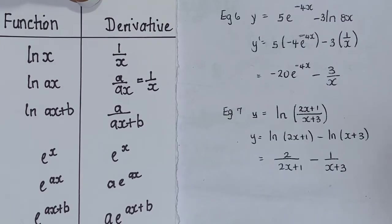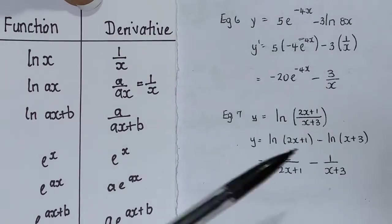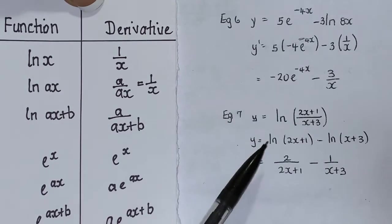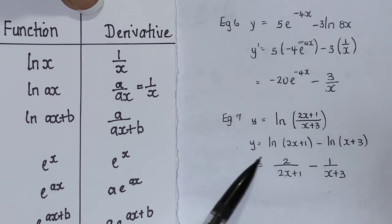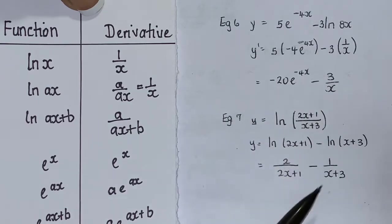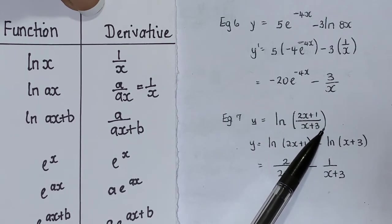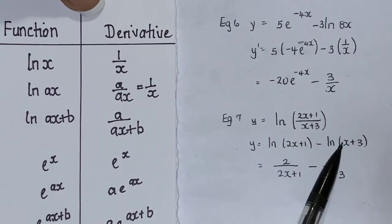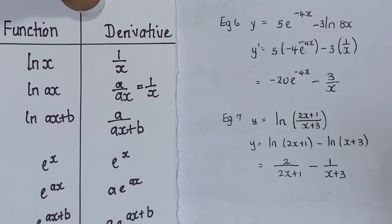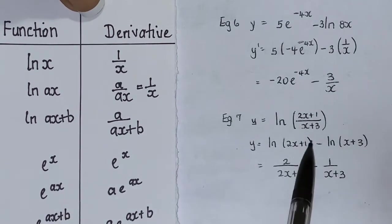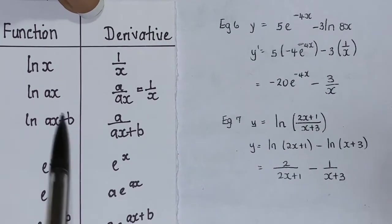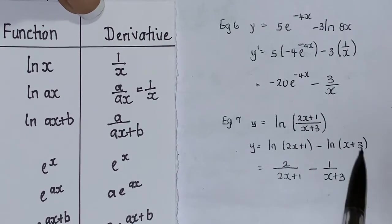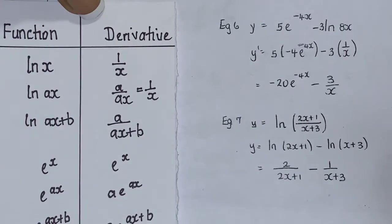Earlier I told you that a function in the form ln(a/b) can be written as ln(a) minus ln(b), and that's what's done here. For ln((2x + 1)/(x + 3)), we rewrite it as ln(2x + 1) minus ln(x + 3), then differentiate them separately. Both follow the ln(ax + b) pattern, so we get 2 over (2x + 1) minus 1 over (x + 3).